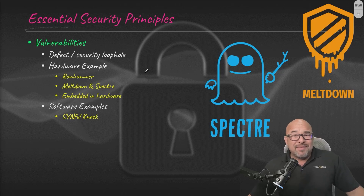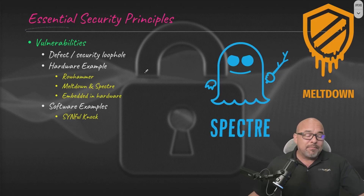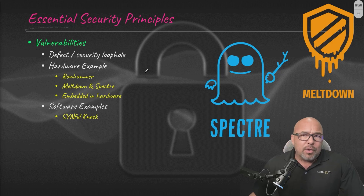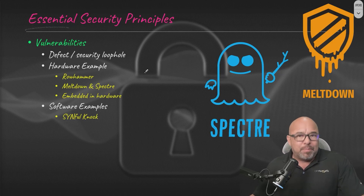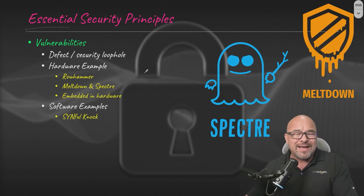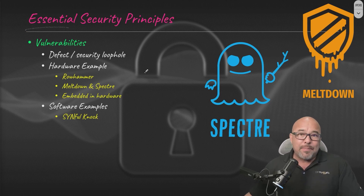Let's take a look at vulnerabilities. This is really the starting point for hackers. In order to be able to exploit something, they have to know of a vulnerability first. So they either look for those vulnerabilities, or they'll take a known vulnerability and then write some kind of programming code against it — or some kind of a script.